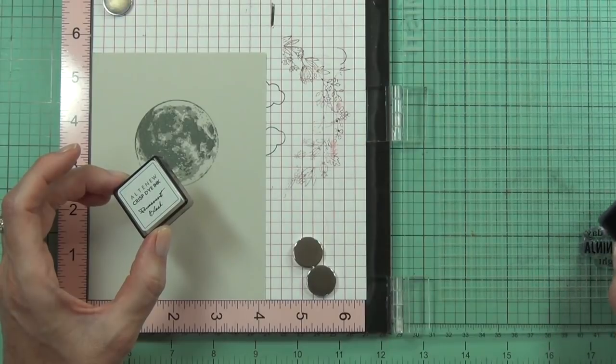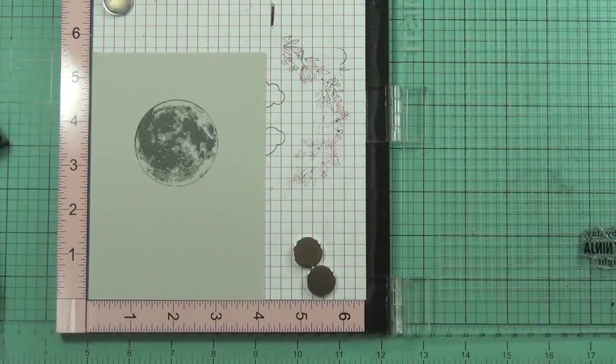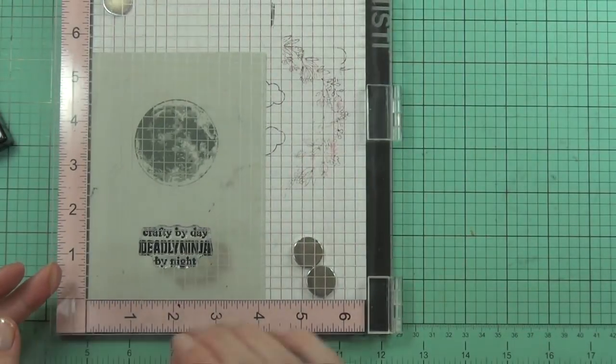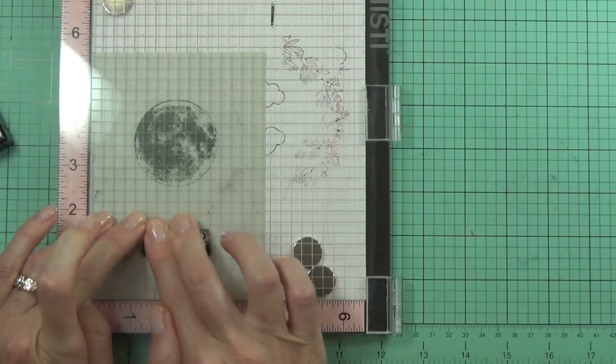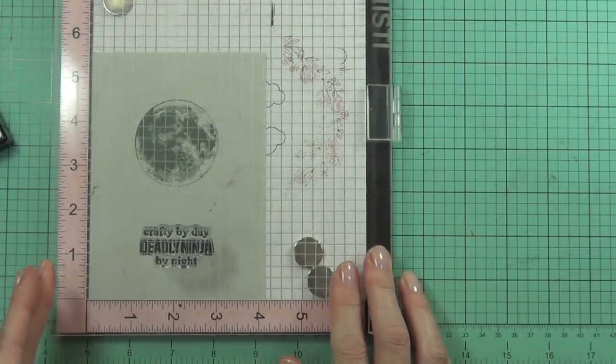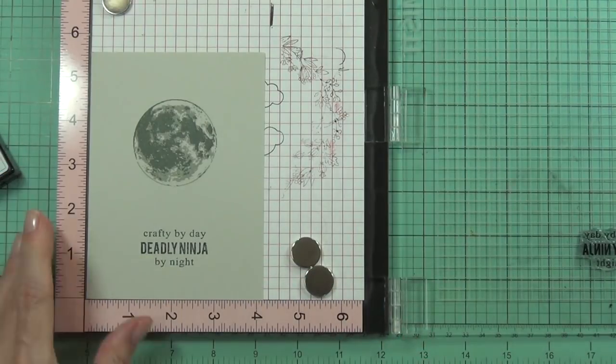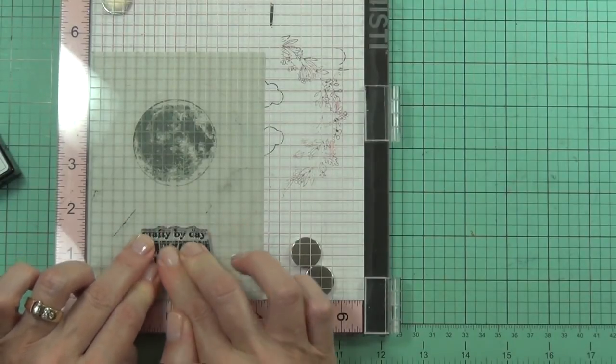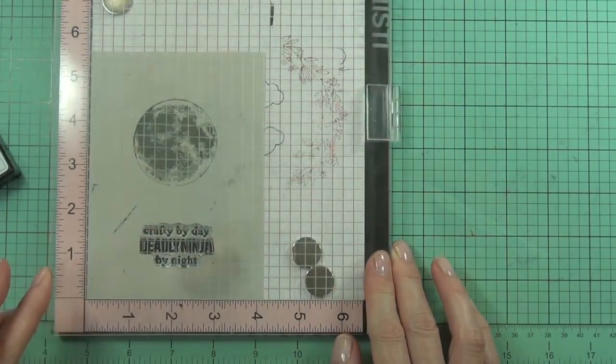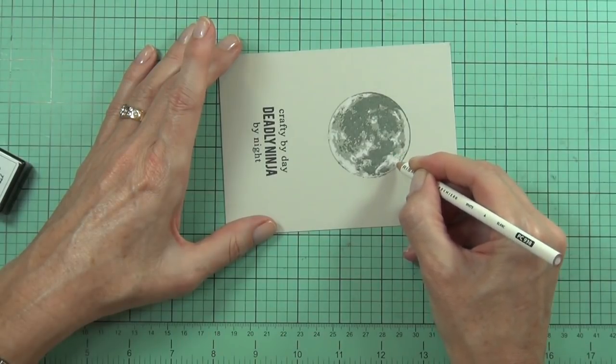So I did decide to stamp my sentiment at the same time because I have my cardstock in, I might as well get it done. I've chosen a sentiment from the same set which is probably my favorite sentiment out of the set. It says crafty by day, deadly ninja by night. It's not me but I'd love to think that I could be a ninja. I'm sorry, I'm just picturing myself being a ninja. It ain't gonna happen.